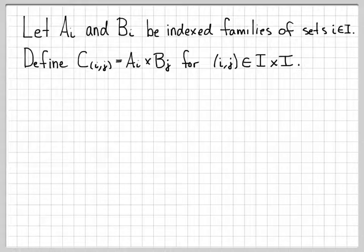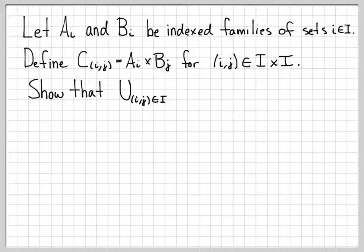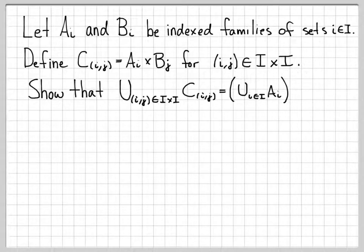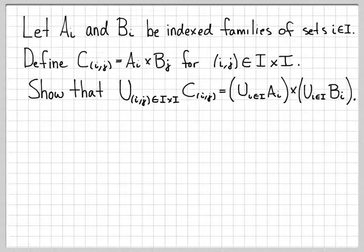So pick an element i, pick an element j, grab set a sub i, and grab set b sub j, and we form the set c of i comma j as just our Cartesian product — we're generating c from sets a_i and b_j. What we're going to show is that the union of all the sets c is equal to the union of all the sets a_i, Cartesian product with all the sets b_i.